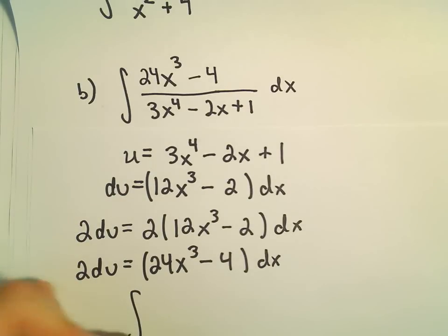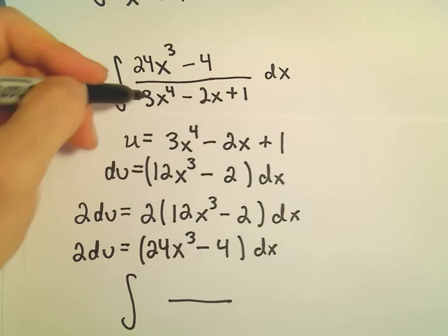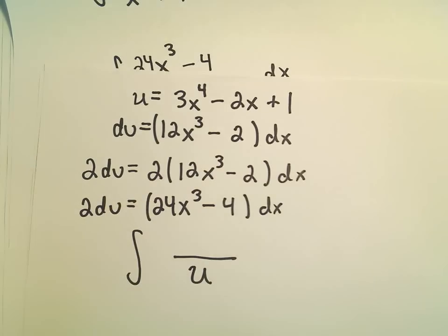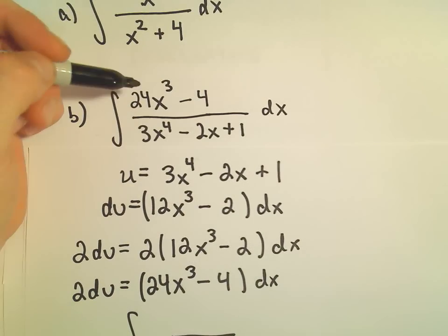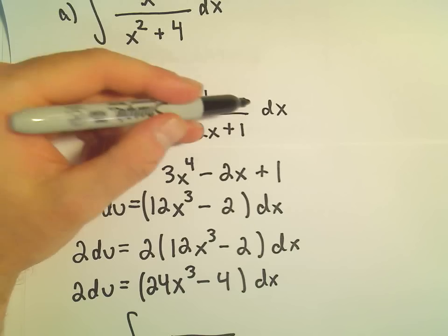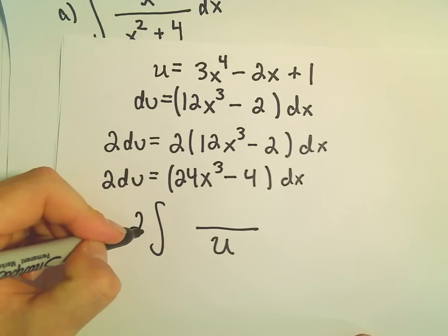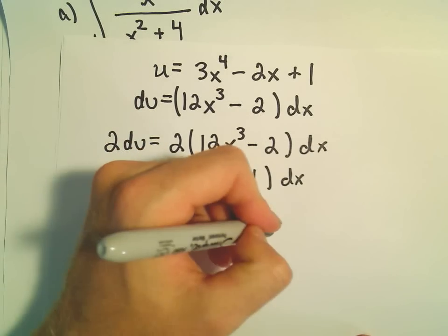So the quantity in the denominator, that's what we're calling u, so we'll just have u downstairs. And then in the numerator, 24x to the third minus 4 dx, that's going to be the same thing as 2du. I'm going to pull the 2 out front and just leave the 1 inside.